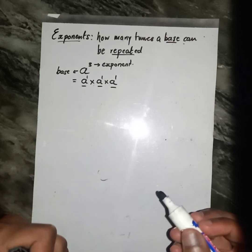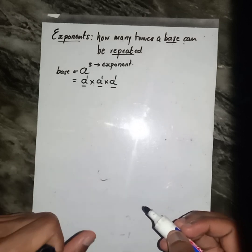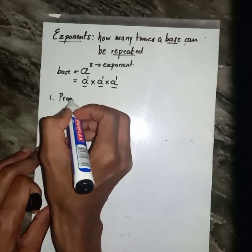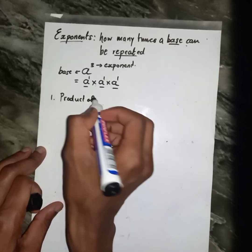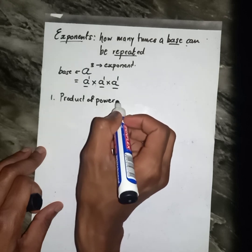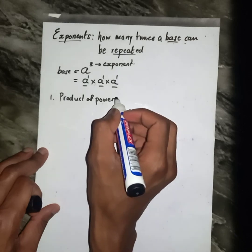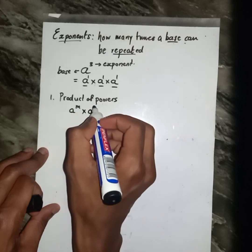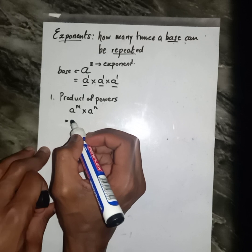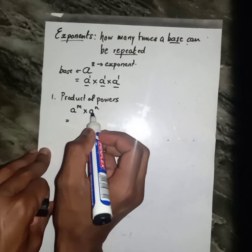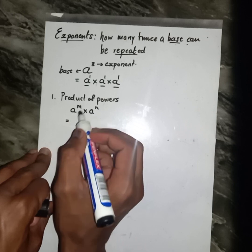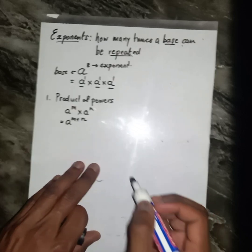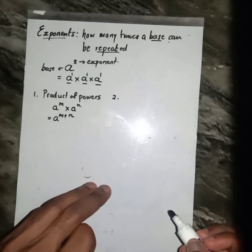What I'm going to do now is highlight some laws of exponents. The first law is the product of powers. It's like if I have a with an exponent of m, multiplied by a with an exponent of n. We can clearly see that we have the same base. For the same base, we are going to add the exponents.